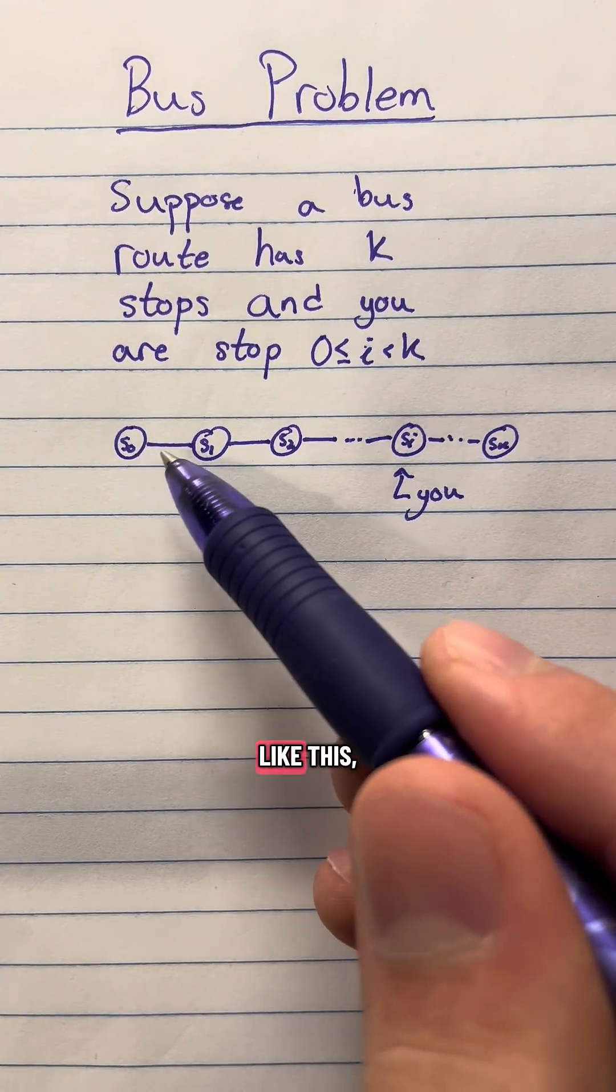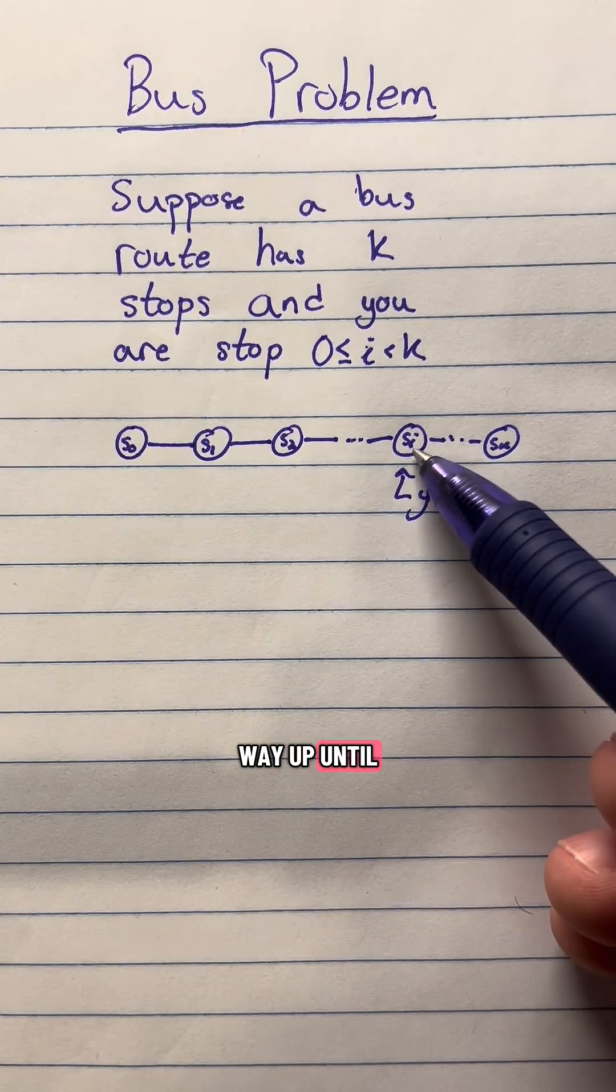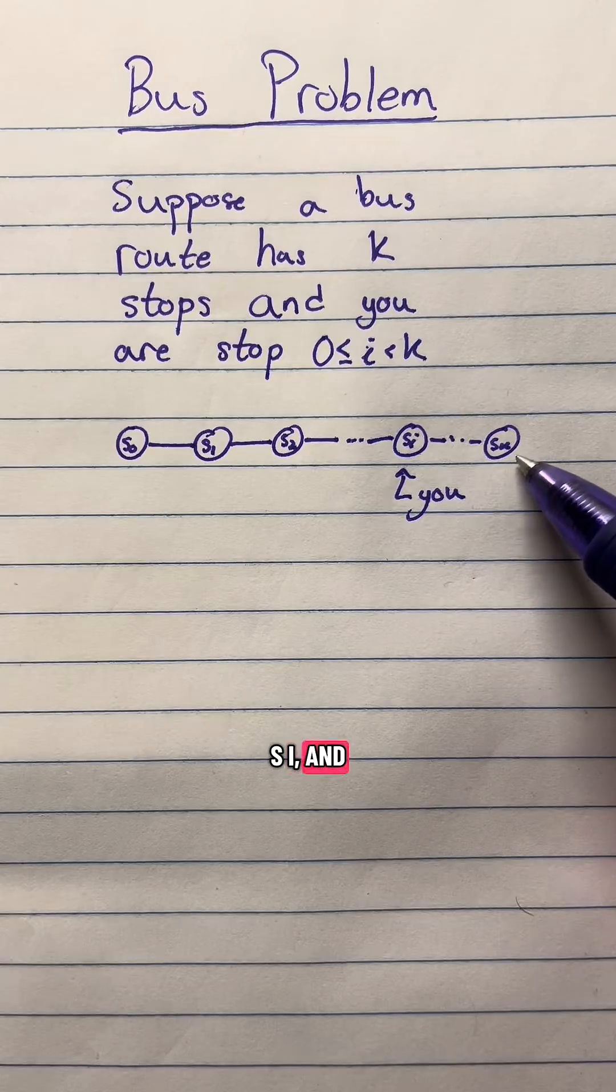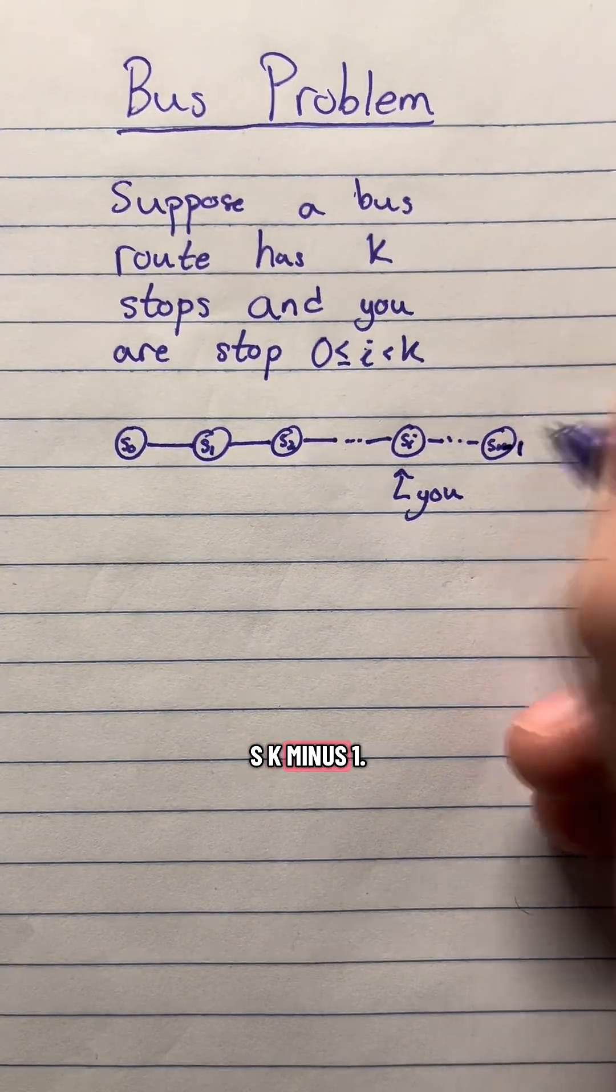So if you look at it like a graph like this, there's s0, s1, s2, all the way up until your stop which would be si, and then the final stop which would be sk minus one.